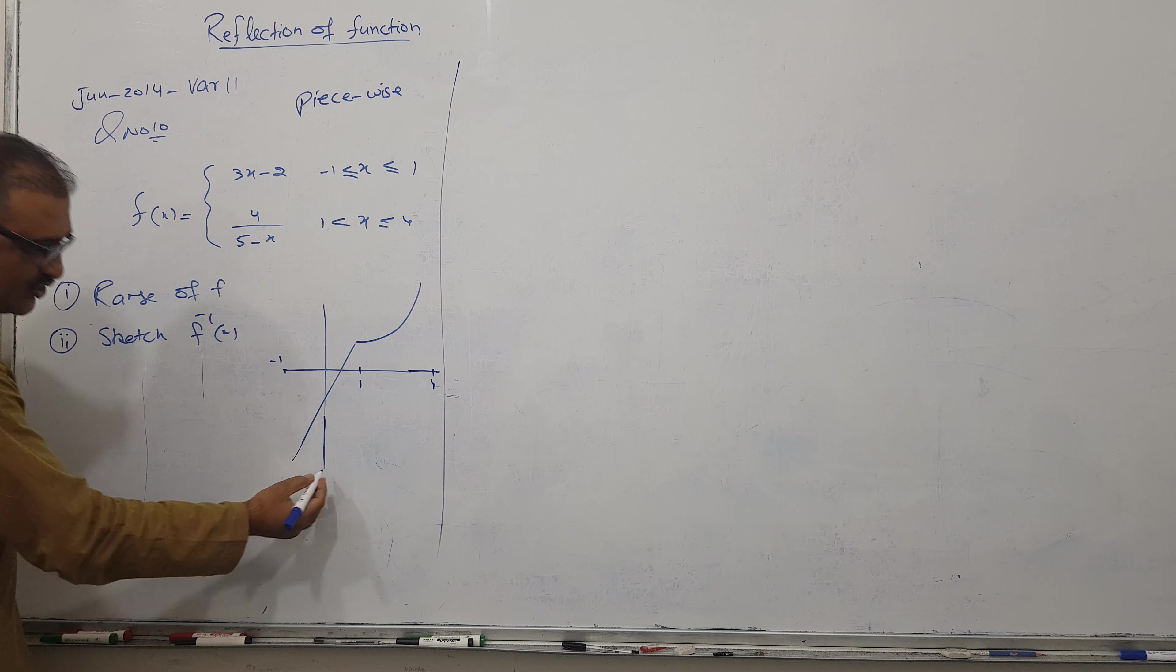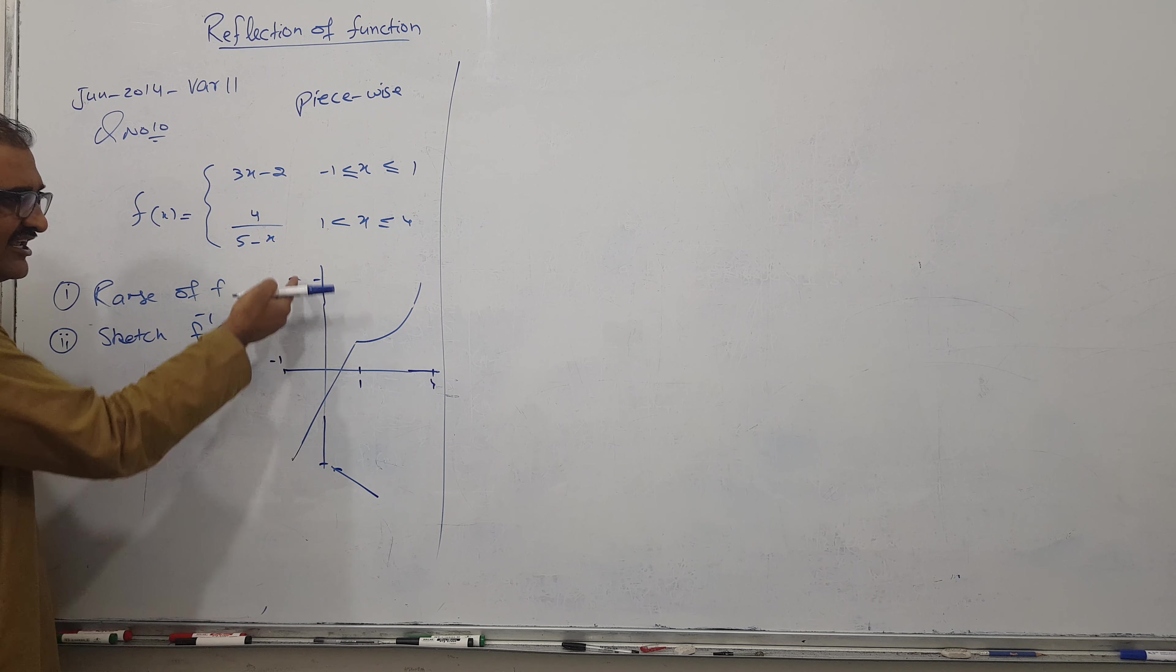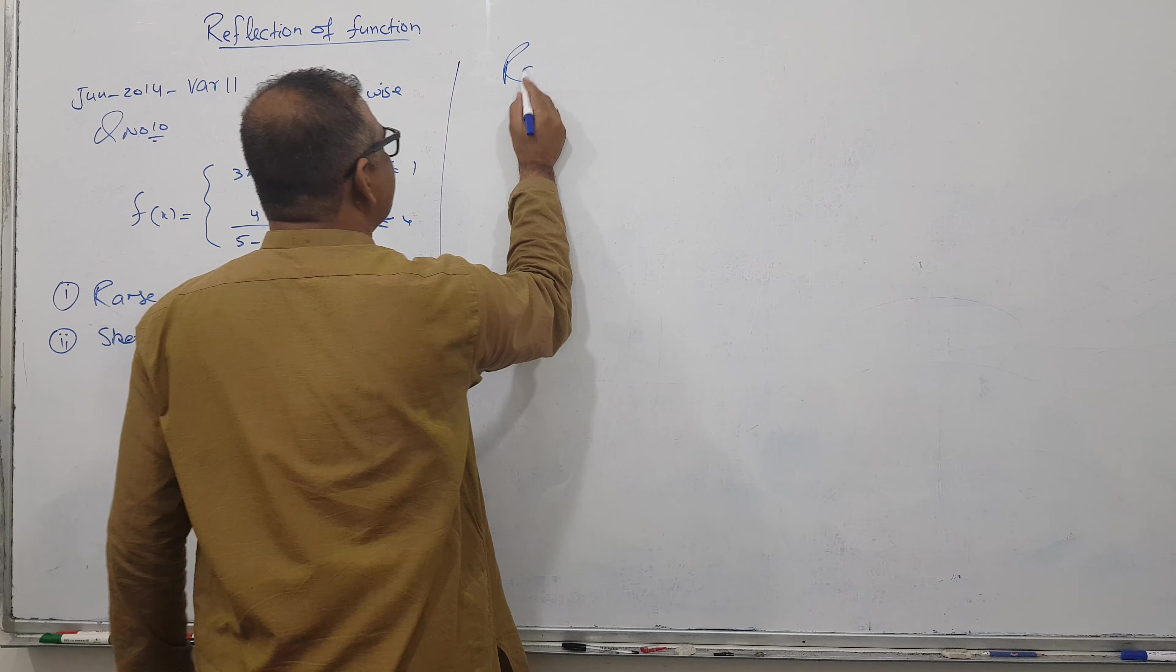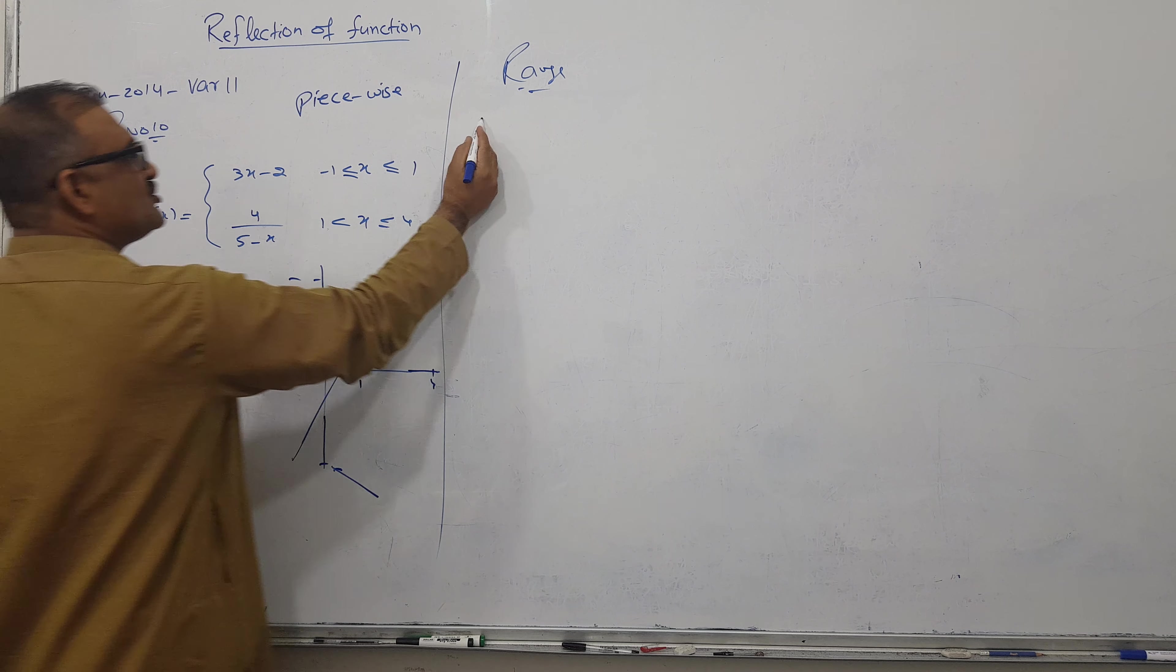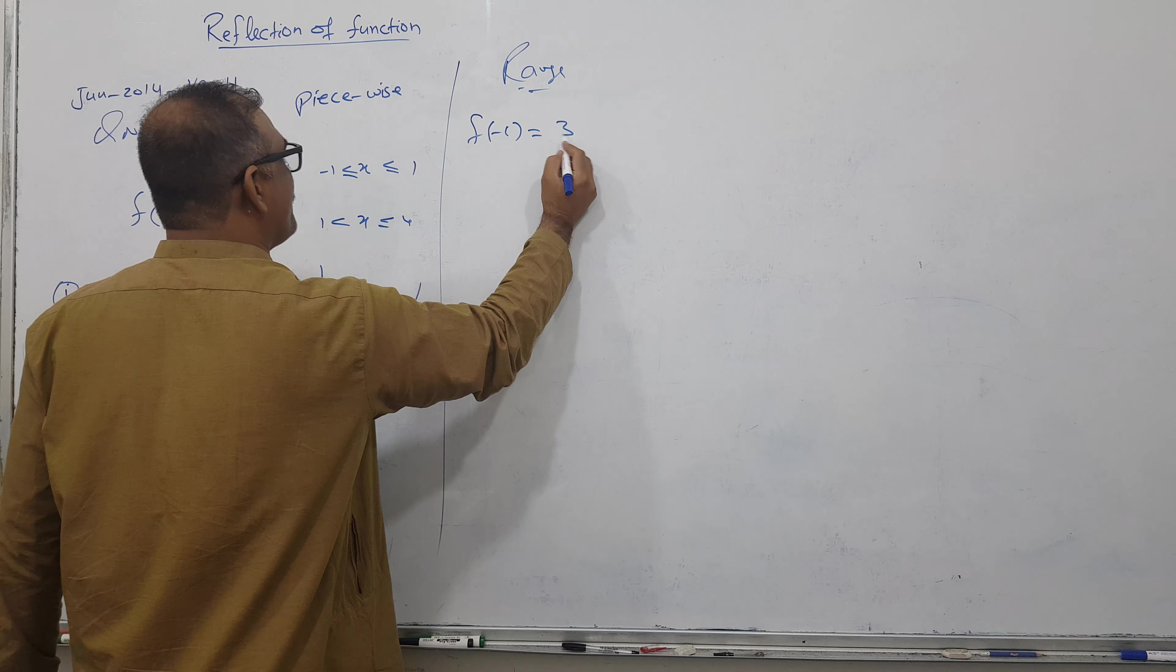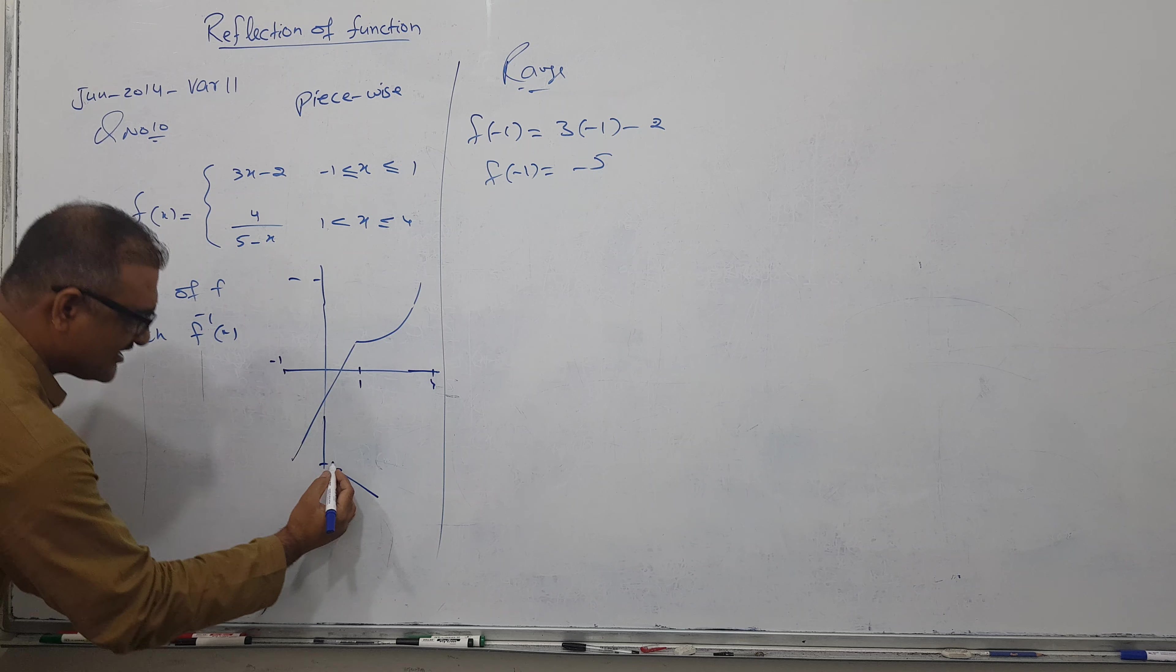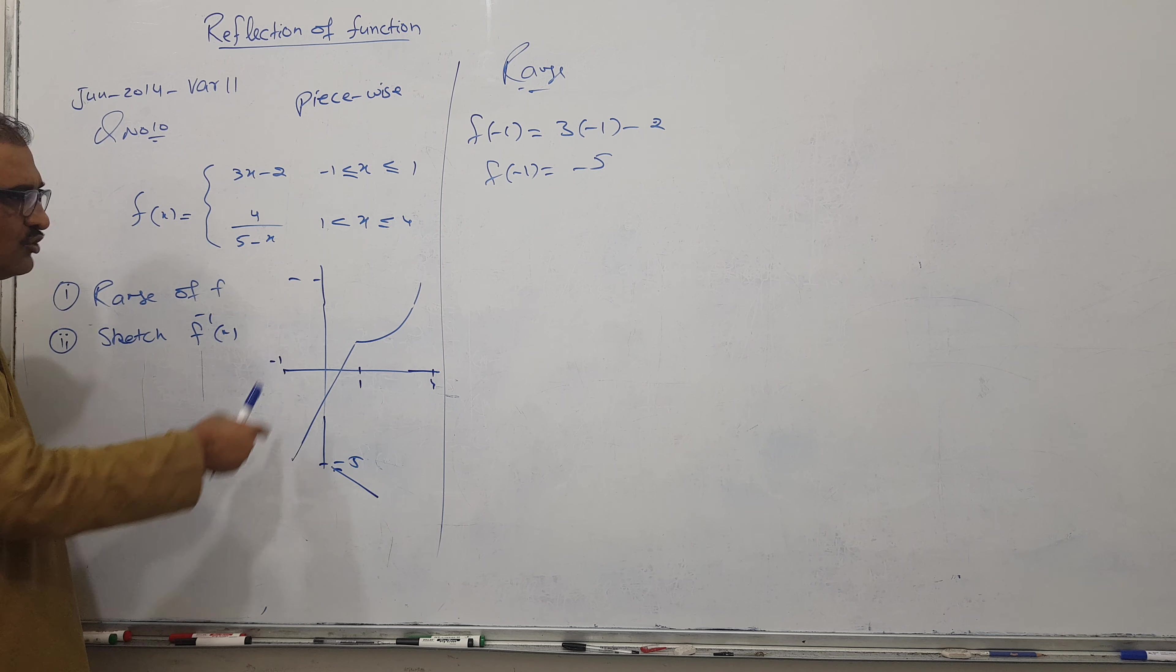For range, there's a lowest value here and a highest value. If I find these numbers, my answer is over. So to find range, simply when I put minus one here, the answer comes three times two minus one minus two. I got minus five, so this is minus five. There's no break in the middle.